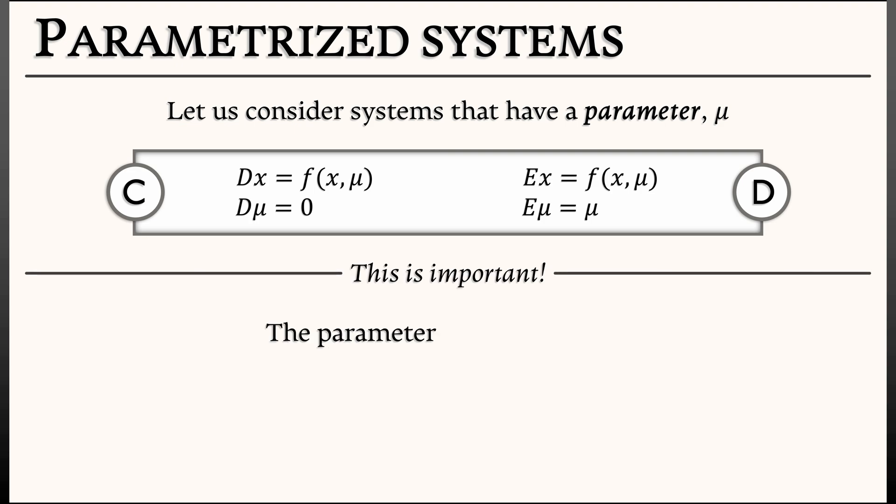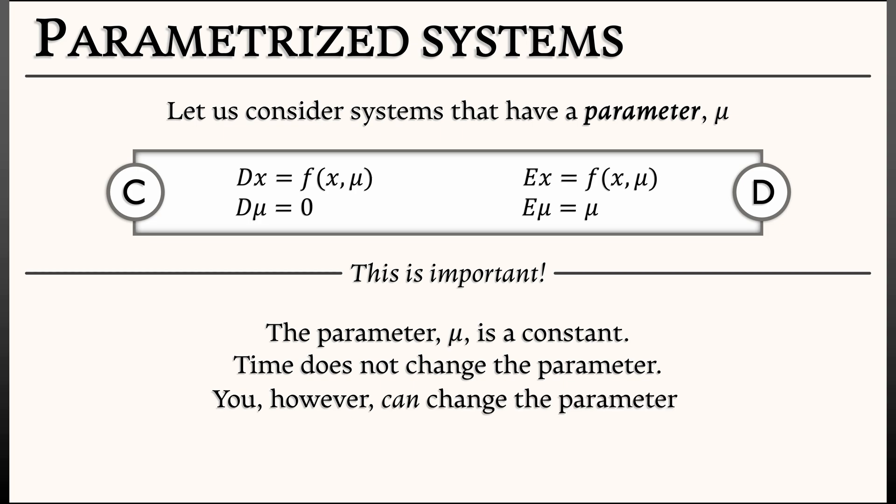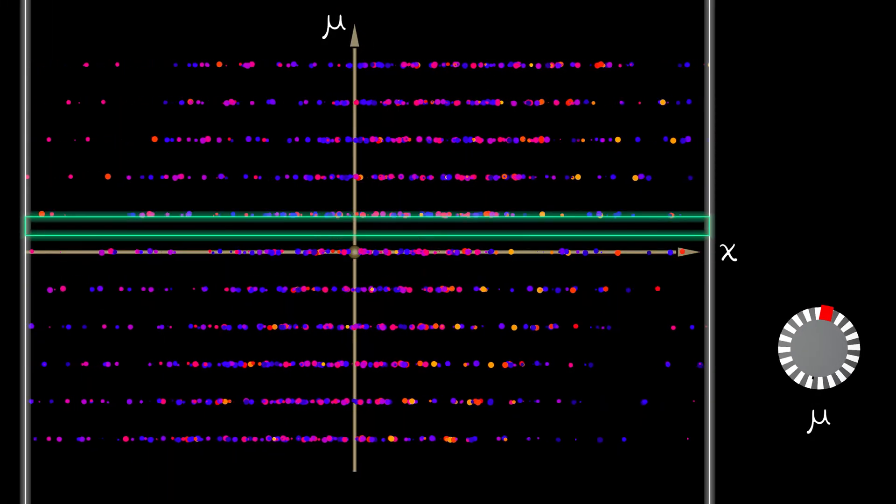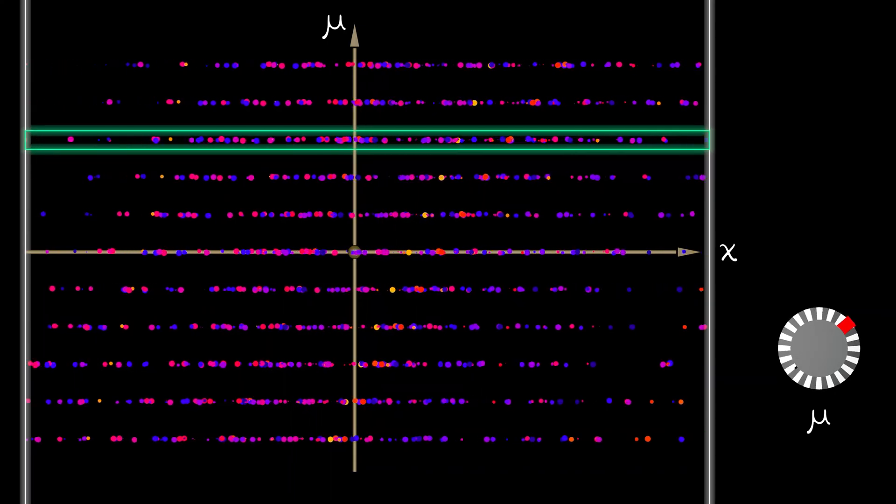dμ/dt = 0 and ēμ = μ. This is really important. The parameter μ is a constant. It does not change over time. However, you can change the parameter. What does that mean? I like to think in terms of something like a multiverse of systems that you can run and analyze. You can run the system over and over with different parameters, turn the dial and see what kinds of changes happen.